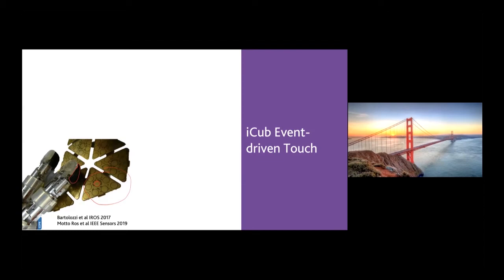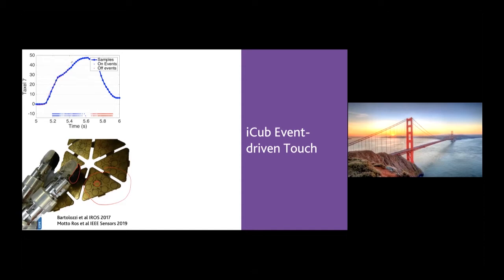The first approach to implement event-driven sensing is to use the technology already integrated on the robot, which still has a clock-driven sampling, but we can implement what is called a soft neuromorphic approach — implementing event-driven encoding at the first stage, very close to the sensor. Here you see what can be done using the signal of one taxel: the signal recorded when the robot taps with one finger on a table, acquired with frame-based clock-driven sampling, and below it, the generated events from the soft neuromorphic code running on an FPGA integrated very close to the skin.